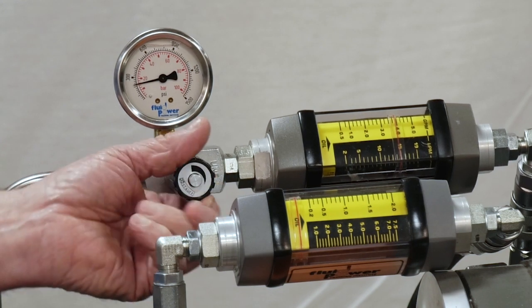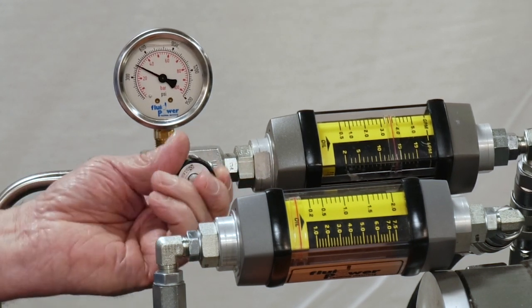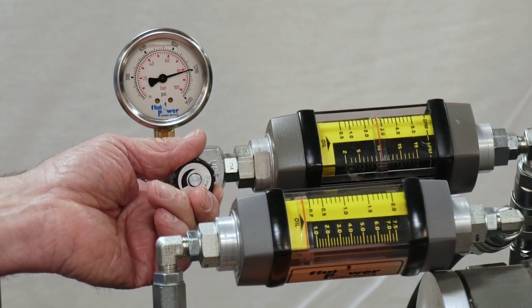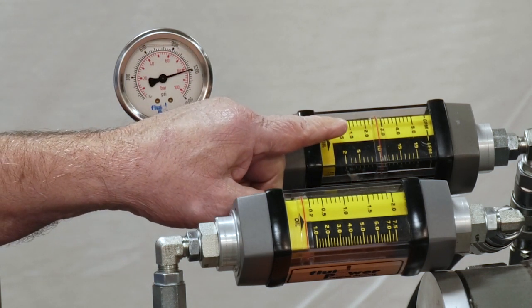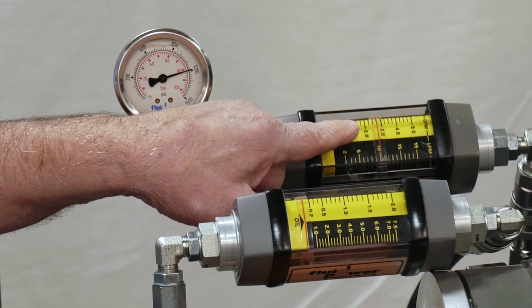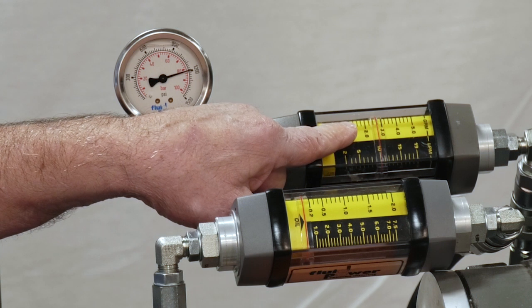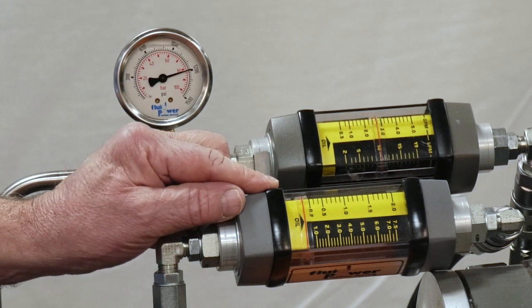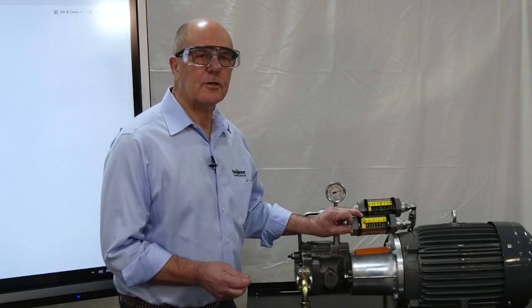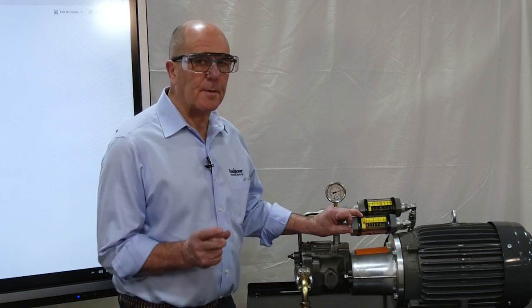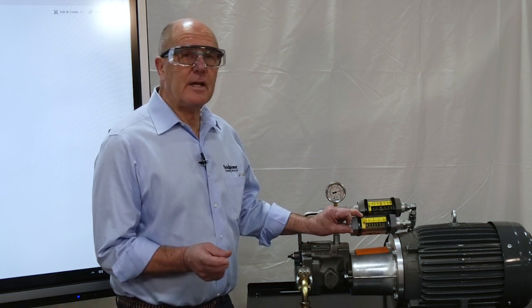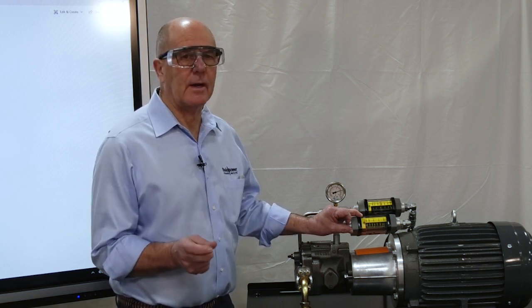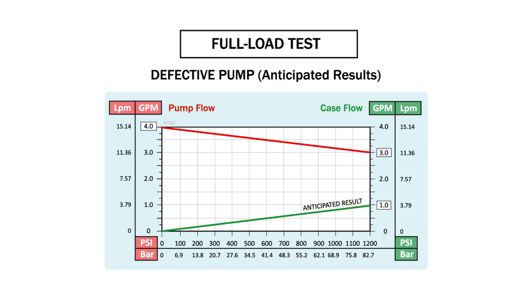Now I am going to load the pump back to 1200 PSI. I am starting to see a decrease in flow on the discharge side of the pump as I increase the pressure drop across the pump's clearances. At 1200 PSI, my flow has dropped to just below 3 gallons per minute on the pressure line, but I am not even showing 0.2 gallons per minute on the case drain line. According to the experts, pump flow and case flow are directly proportional — so if pump flow decreased by 1 gallon per minute, case flow should have increased by 1 gallon per minute. But that is not what happened.